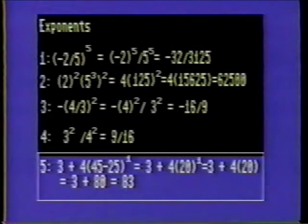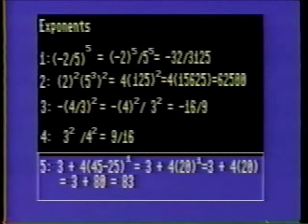Number 5. In this problem, solve the operations inside the parenthesis first. 45 minus 25 is 20. Now we have 3 plus 4 times 20 to the first power. 20 to the first power is 20, which yields 3 plus 4 times 20. Next, multiply 20 times 4 to get 80. Adding these two numbers yields 83.